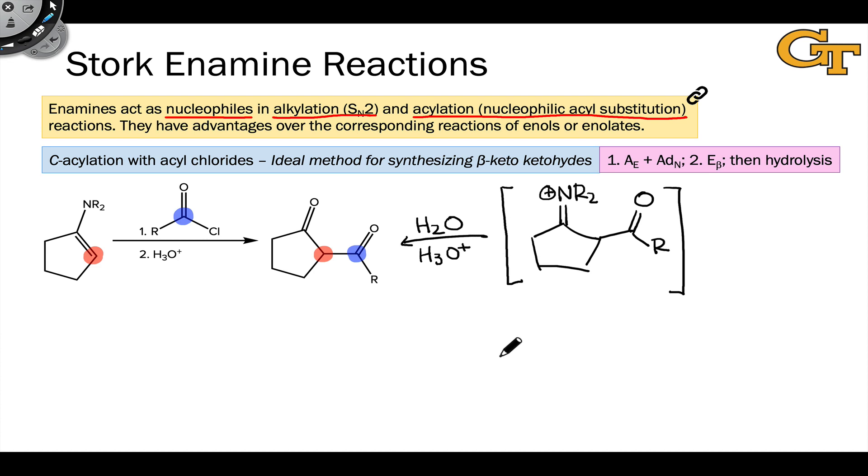This intermediate undergoes hydrolysis to give the product beta-diketone, and this is really the ideal way to synthesize beta-keto ketones or beta-diketones.